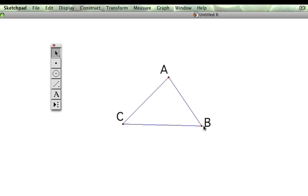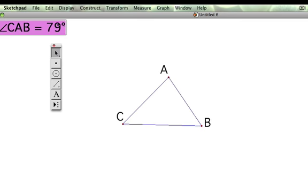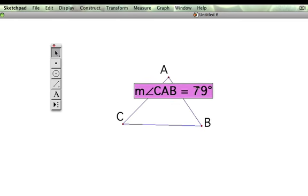Or we could call it angle BAC. And so always the angle that we're talking about is the center, the middle of the three letters. So to measure this angle between these two lines, we click on C, A, and B in that order. So we're going to measure and click measure angle. And it comes out to be 79 degrees.